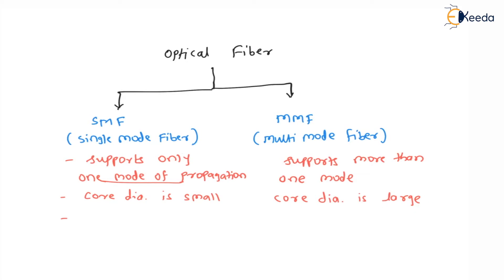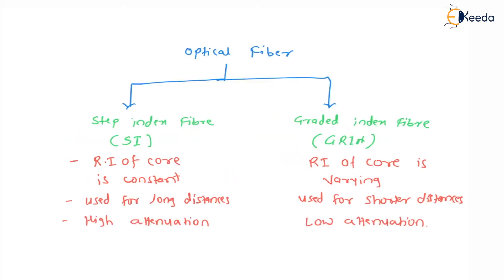These two types of optical fibers are again divided according to their application into step index fiber and graded index fiber. Step index fiber is abbreviated as SI, and for graded index fiber we use the abbreviation GRIN.